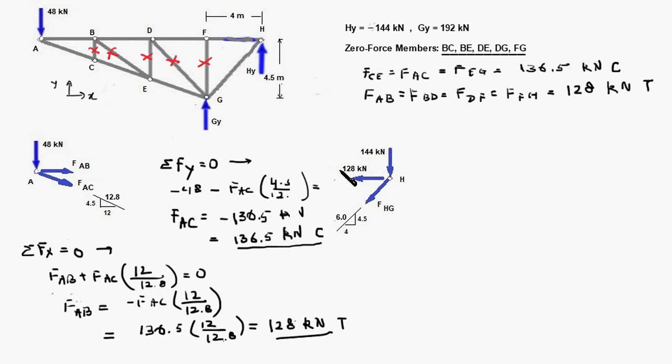Right here is the FBD of pin H. HY is in fact minus 144 so it is pointing downwards. Since the member FH has got tension of 128 kilonewton it is pointing away from the pin and we do not know the internal force in this member and we assume that it is in tension therefore it is pointing away from the pin H. The slope of this line is 4.5 upon 4 and therefore the hypotenuse of this right angle triangle is 6.